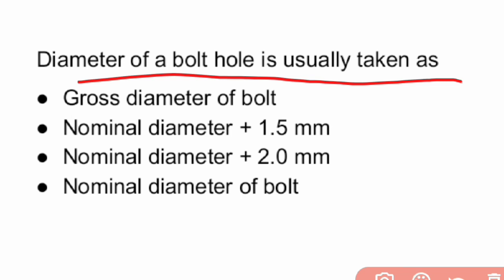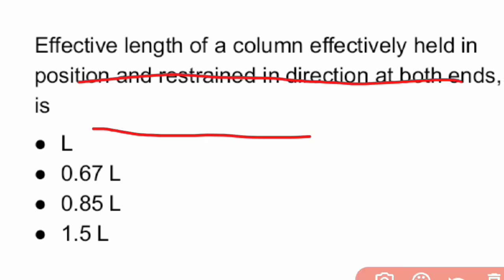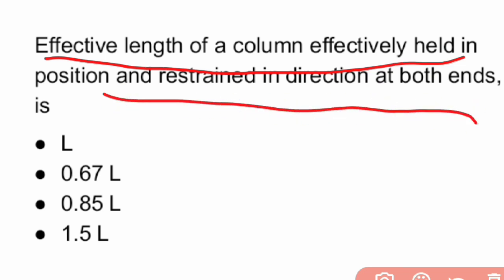Next question: the diameter of a bolt hole is usually taken as what? The diameter of a bolt hole is usually taken as the nominal diameter plus 1.5 mm.